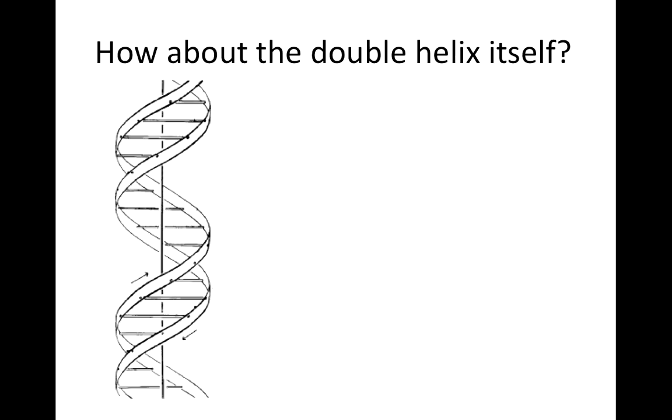This is a simplified diagram of a piece of double-stranded DNA. As you can see, it looks like a ladder that has been twisted around a central axis. Notice the arrows toward the bottom of the picture that are going in opposite directions. We will talk about their meaning later on in the presentation.